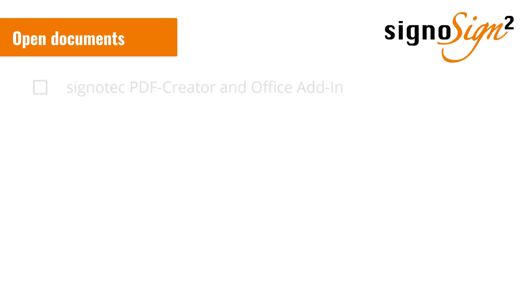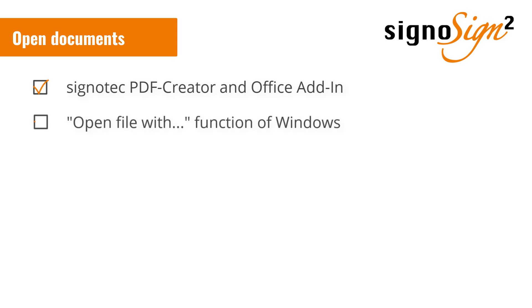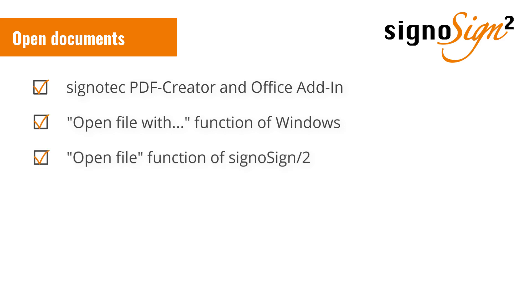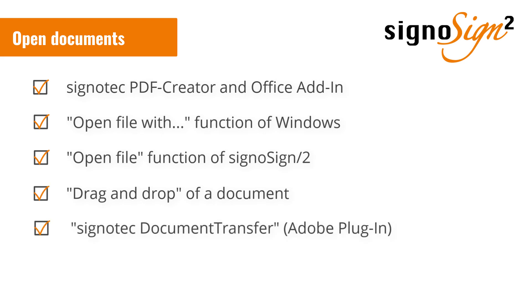Basically, the software offers many possibilities to open a document. We will show you the individual ways in more detail in the course of the video. The possibilities include the Cygnetec PDF creator and the corresponding Word add-in, open file with function of Windows, open file function of CygnusSign 2, simple drag-and-drop of a document, the Cygnetec document transfer plugin, as well as the programmatic call of the software, which is not part of this introduction.